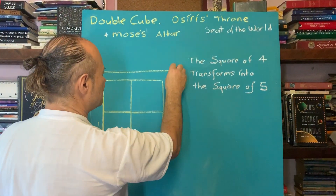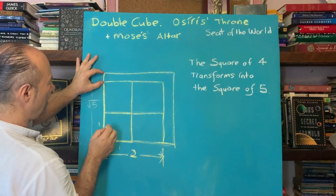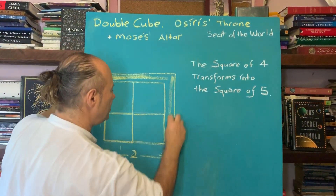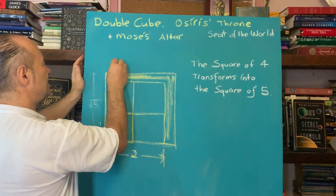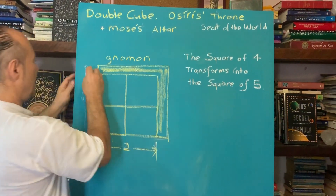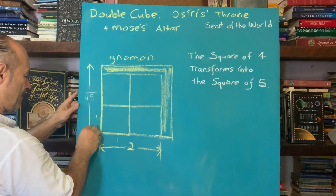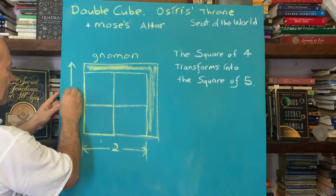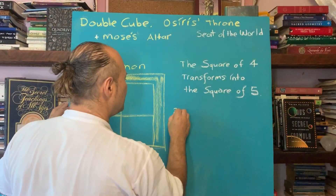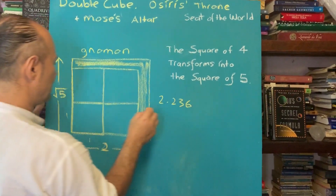Something morphs and shifts so that the actual throne the ancient Egyptian king is sitting on has a distance a bit more. This is called a gnomon — like an L shape. This extra gnomon is called root five, and as we saw before, root five is 2.236.